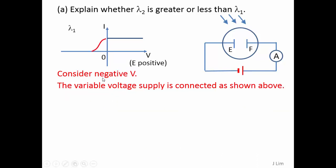Now consider the negative potential, negative V. So this is the region. And in this case, E will be negative. So that's how you connect the apparatus.